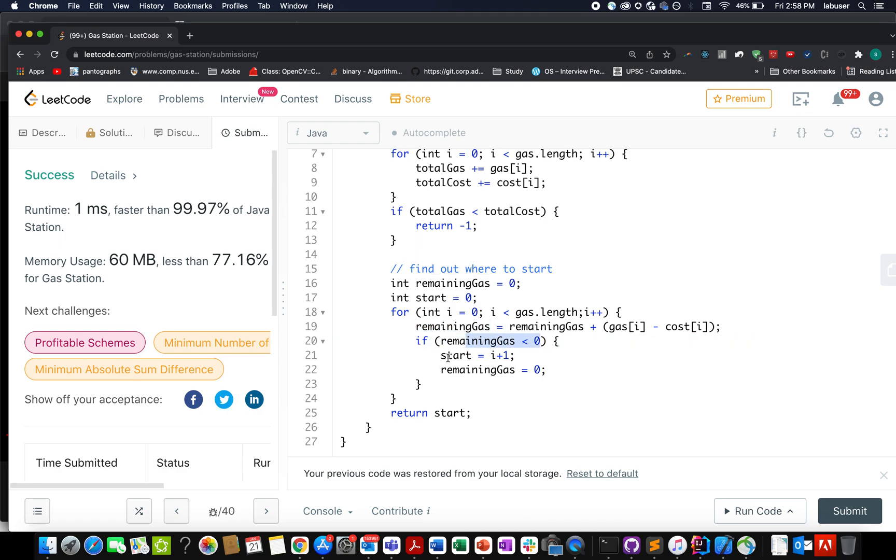What will I do? I simply discard my previous start location because that will not lead to iteration over all the gas stations. And I update my starting monitor to i plus one. Also, I update my remaining gas to zero because right now we are reconsidering i plus one as a starting location. Once I'm done with this, I simply return my starting monitor. So let's try this up.